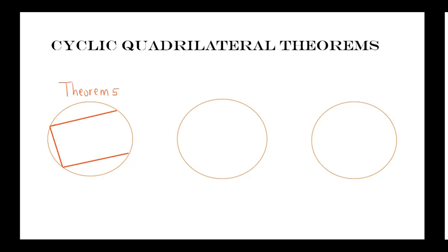We're given a cyclic quadrilateral — a quadrilateral that is inscribed in a circle. This theorem states that opposite angles of a cyclic quad are supplementary. If we label our diagram as A, B, C, and D, this theorem is saying that A and D are supplementary, meaning they add up to 180. So angle A plus angle D equals 180 degrees.